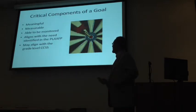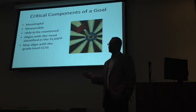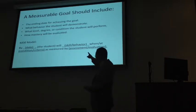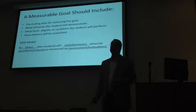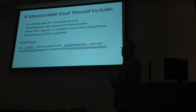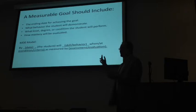Critical components of a goal: it must be measurable, it will be monitored, it aligns with the PLAAFP, and it may align with grade-level content standards depending on where the student is functioning. A measurable goal follows this format: by a specific date, the student will do a skill, under a certain condition, as measured by a specific assessment. This applies to all goal types — academic, social-emotional, behavioral, functional, and adaptive goals. It may be easier to write measurable academic goals than social-emotional goals, but the same format applies.